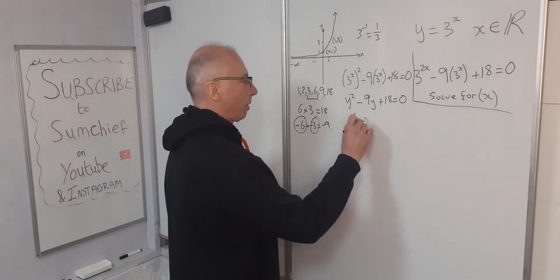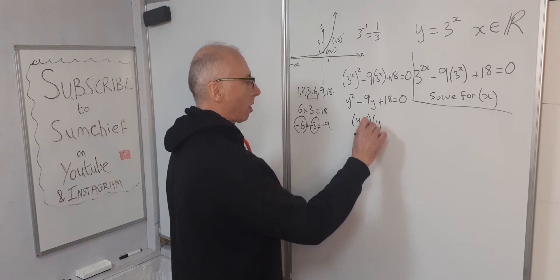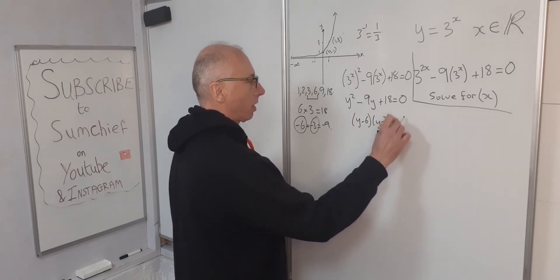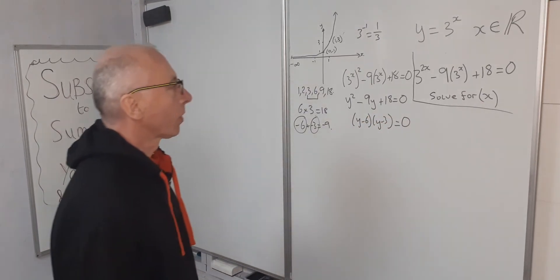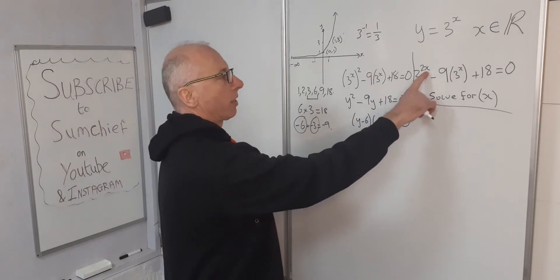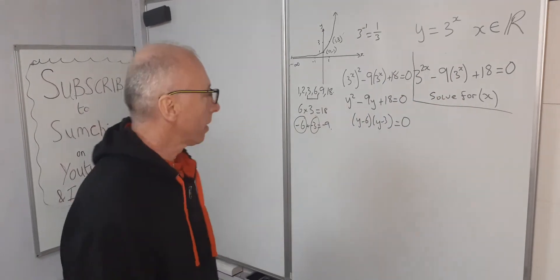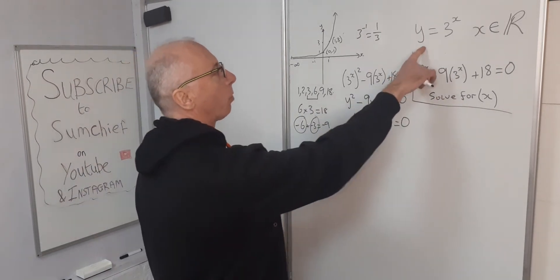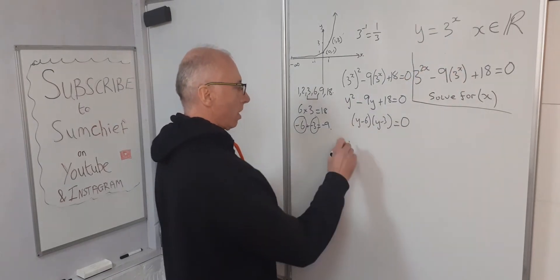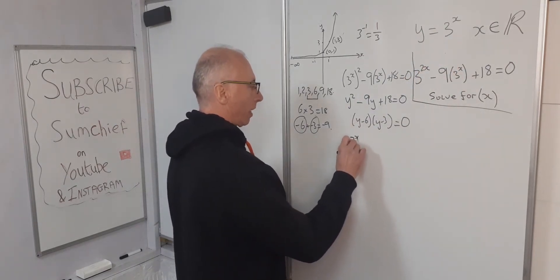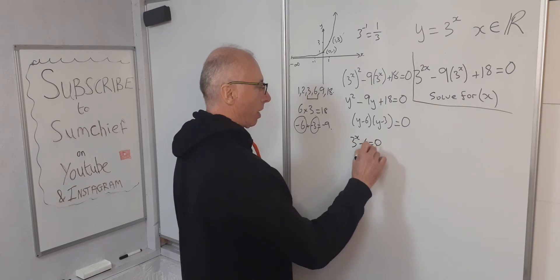So therefore we've got y minus 6, y minus 3 equals 0. We want to solve for this, solve for the x. So let's just plug that back in, y equals 3 to the x. So therefore we've got 3 to the x minus 6 equals 0.